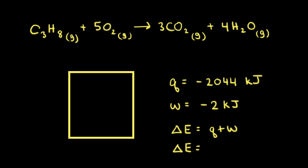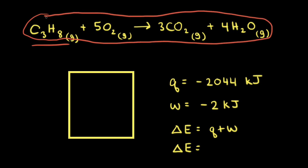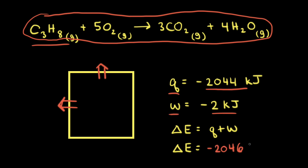Let's apply the first law of thermodynamics to the combustion of propane in an open container at constant pressure. The reactants and products of the combustion reaction are considered the system, and everything else is the surroundings. This combustion reaction gives off 2,044 kilojoules of heat transferred from the system to the surroundings. The system also does 2 kilojoules of work on the surroundings, which by convention is negative. Adding Q plus W gives a change in internal energy of negative 2,046 kilojoules.